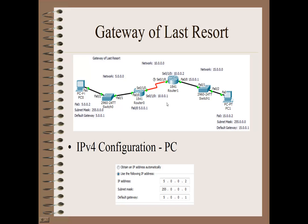Now we're talking about gateway of last resort. The gateway of last resort is set in each one of these routers. For router 0, its gateway of last resort is going to be port 10.0.0.2 on its serial port - so all traffic from PC0 goes through router 0 and then to the second router. The second router's gateway of last resort is the first router, port 10.0.0.1. So each router has its own default gateway, and it becomes the port they're connected to on the subsequent router.